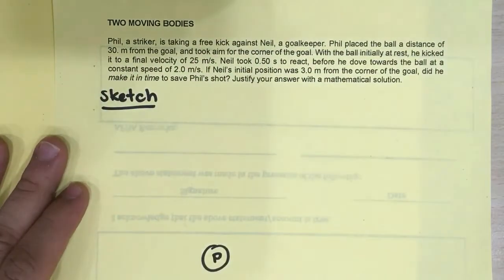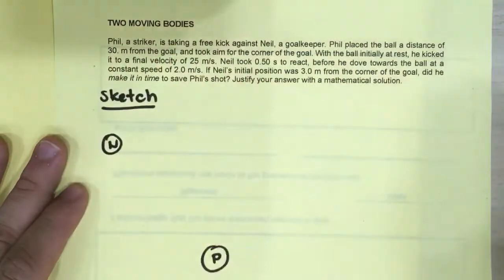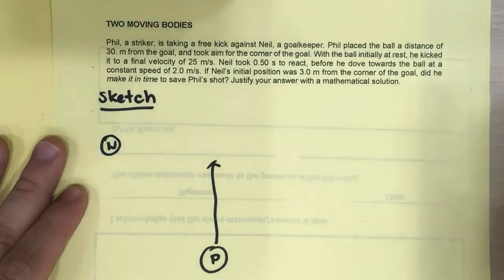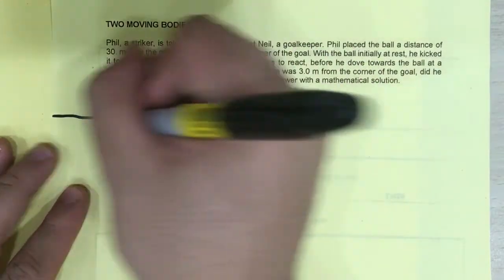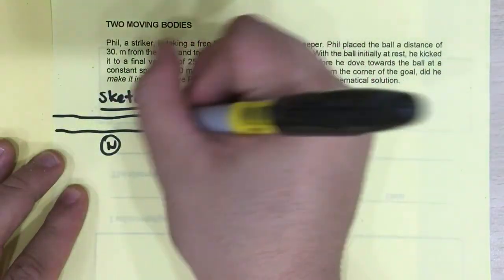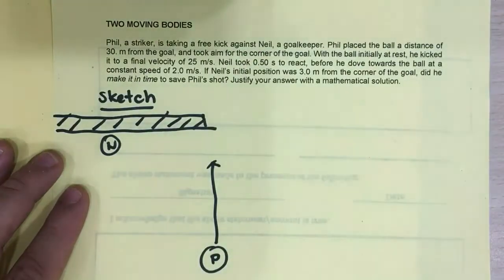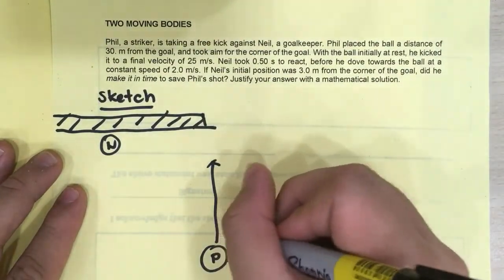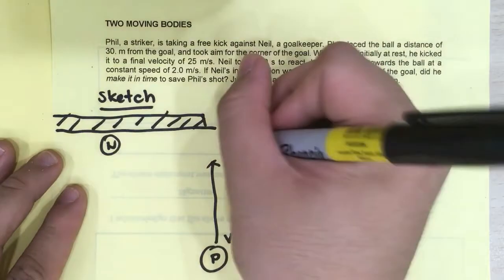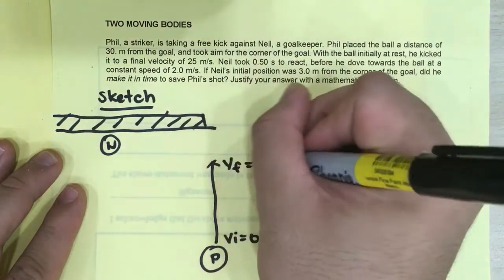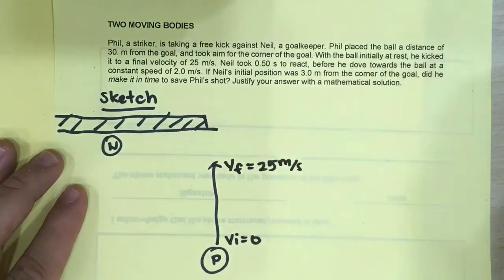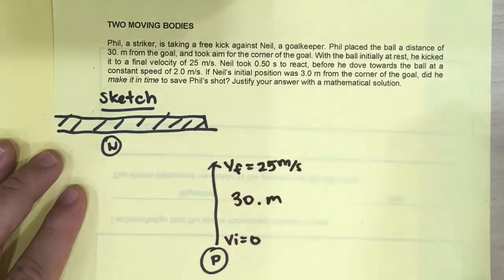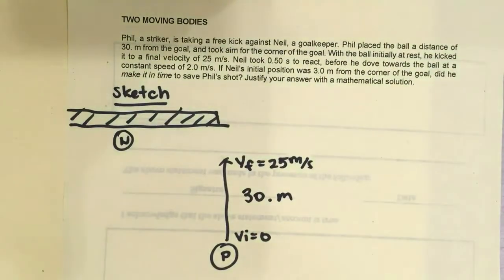So let's put the striker here, Phil. Neil, the goalkeeper, goes there. Phil takes a shot going towards the corner of the goal. So let's see if we can draw a goal over here. Let's pretend that this is the goal. Takes a shot towards the corner. You know that the shot started out at rest because it's a free kick, and it ended with a final velocity of 25 meters per second. You know that the shot was taken 30 meters from the goal.